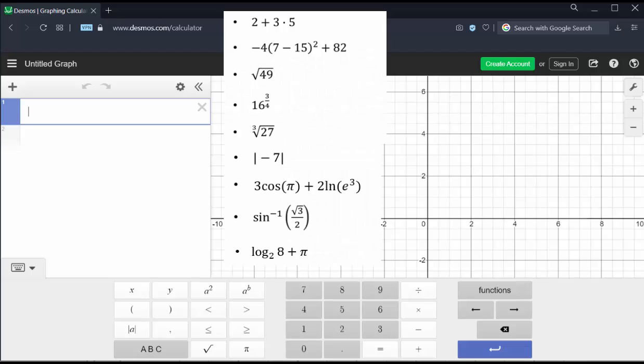And now let's evaluate the first expression which is two plus three times five. We enter two plus three times five. And notice how the expression is equal to 17. If we click enter or return, the cursor goes to cell two.